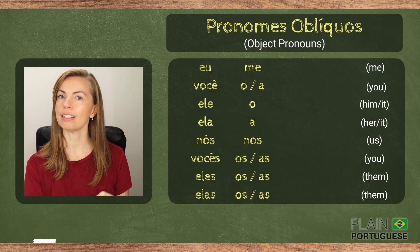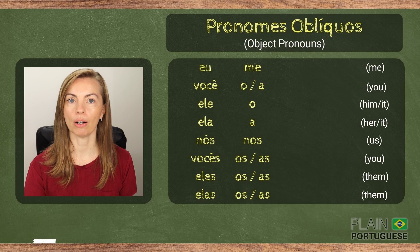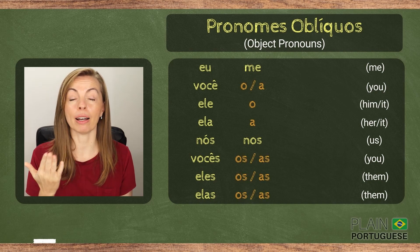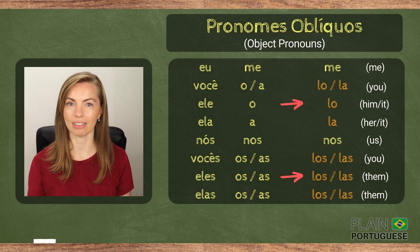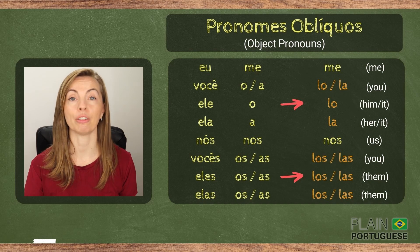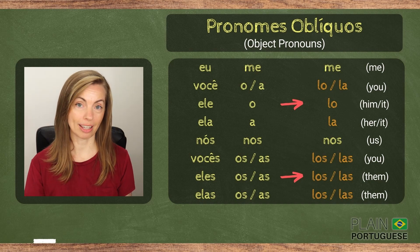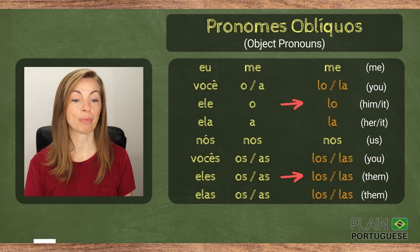Some lessons ago, you learned that we can use some small words — aka pronouns — to avoid repeating a person's name or any other nouns. Do you recall this table? And do you also recall that O, A, OS, AS may become LO, LA, LOS, LAS depending on the context? If not, links to those lessons are in the description box below.